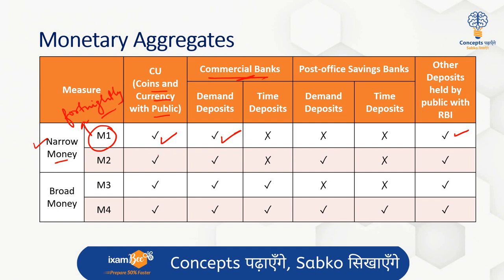M2 also includes coins and currency held with the public, demand deposits with commercial banks as well as post office savings banks, and other deposits held by the public with the central bank. In other words, M2 equals M1 plus demand deposits with post office savings banks.